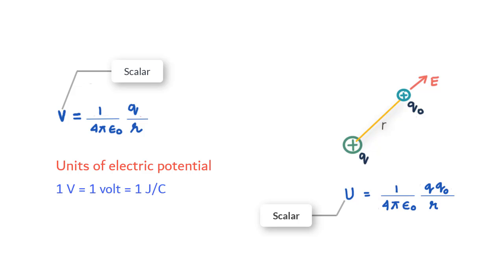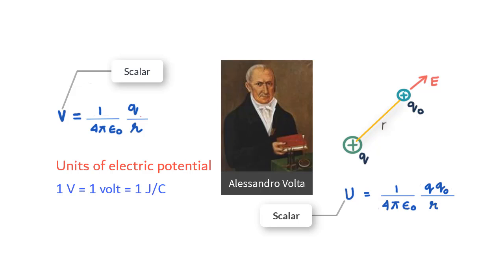You must know that the volt was named after the great Italian scientist Alessandro Volta. So we write: 1 V = 1 Joule per coulomb.